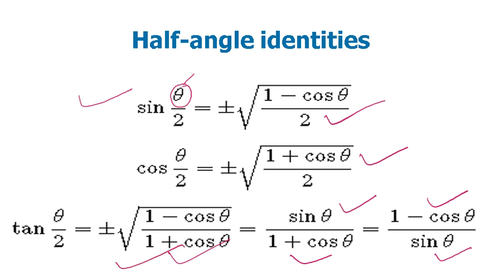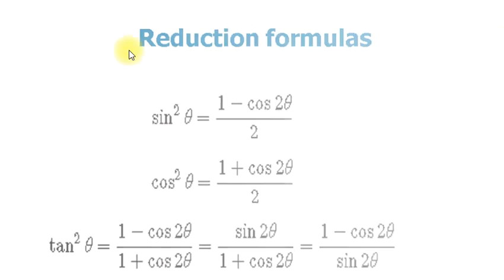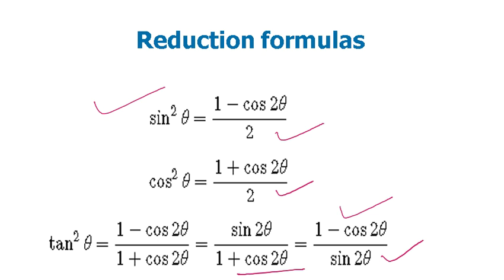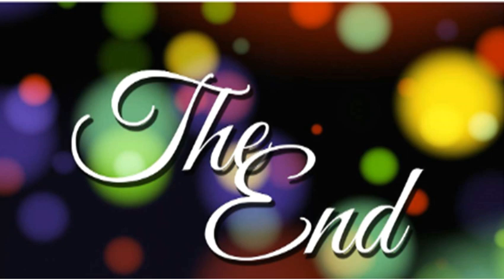Now, reduction formulas — very familiar. sin²θ = (1 − cos 2θ)/2. cos²θ = (1 + cos 2θ)/2. tan²θ = (1 − cos 2θ)/(1 + cos 2θ). Also: sin 2θ / (1 + cos 2θ) and (1 − cos 2θ) / sin 2θ. My dear learners, I will see you in the next session. Until then, stay safe. Thanks for watching. Have a nice day to all of you.